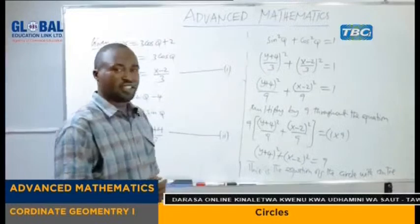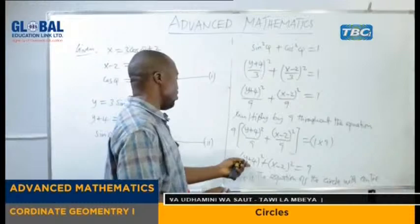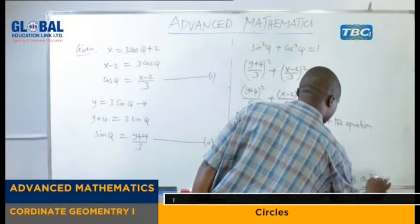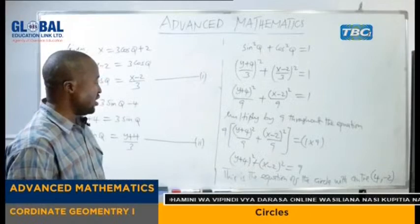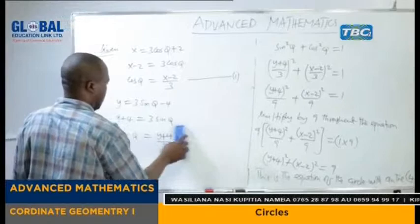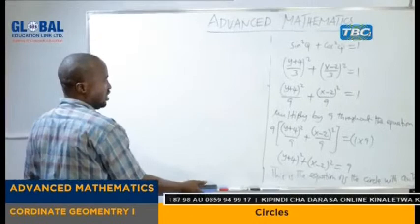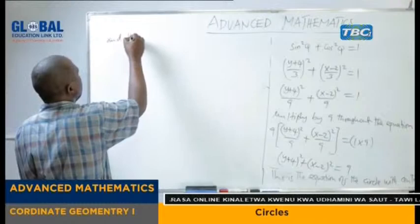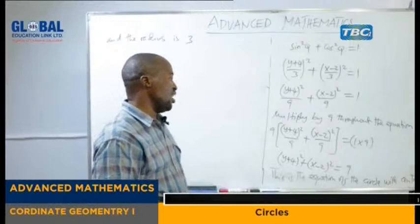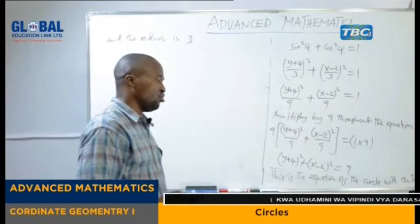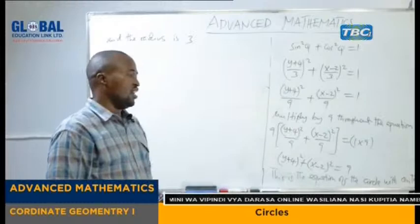So here we can say this is the equation of the circle with center. The center — remember, the center is (A, B) — so here we are going to have (−4, 2)... that is center (4, −2). That will be the center of our circle. And the radius of our circle will be equal to 3, because here we have 9, and remember this is R squared, so R will be equal to 3. That is how to show that the given coordinates represent a circle.